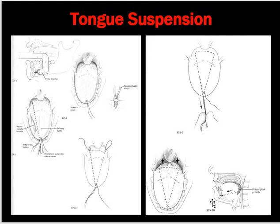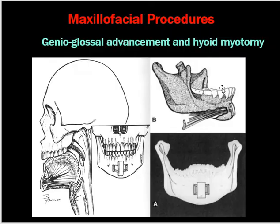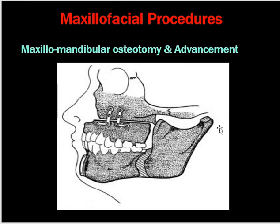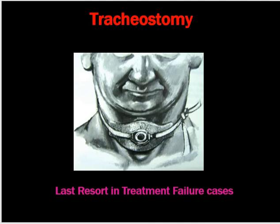Major facial procedures like genioglossal advancement and hyoid myotomy are performed when the patient has genioglossal or hyoid problems, such as a large hyoid or protruding mandible, again aimed at making the respiratory area larger. Tracheostomy is the last resort in treatment failure cases. With a tracheostomy, the patient breathes directly through the trachea, bypassing the oral and nasal cavity, thus eliminating apnea episodes.